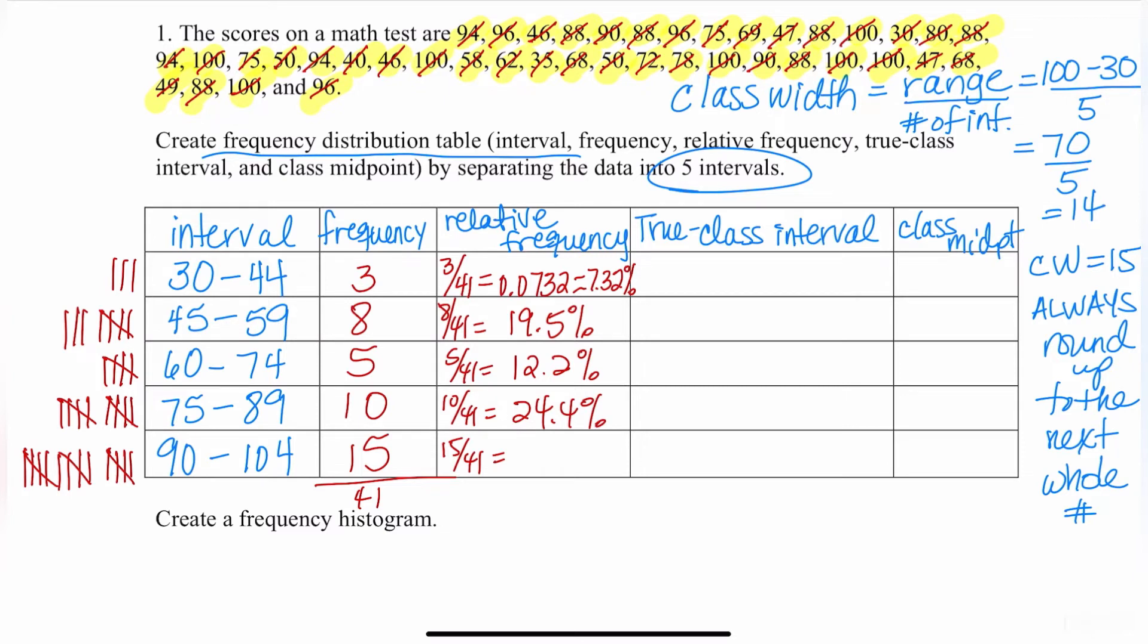The next one is 12.2%. 10 divided by 41 times 100 is 24.4%, and 15 divided by 41 is 36.6%. I always like to take the percentages and add them up together. 7.32 plus 19.5 plus 12.2 plus 24.4 plus 36.6 equals 100.02, which is approximately 100%. We got 100.02% because of roundoff error. All these fractions that we divided and multiplied to make into percentages, we're actually rounding them. Notice this is approximately 100%, not off by that much. If you get 95% or 105%, that's too much. Somewhere along the line, there is a mistake.